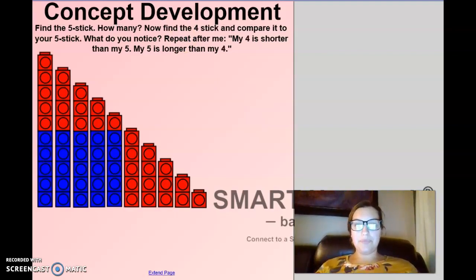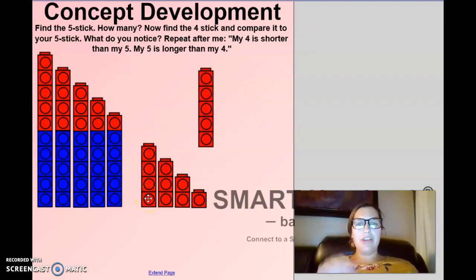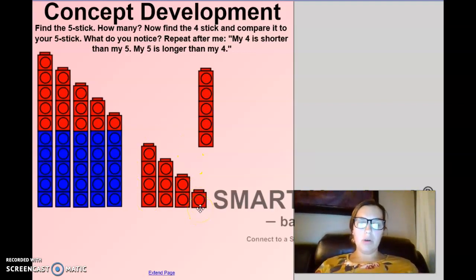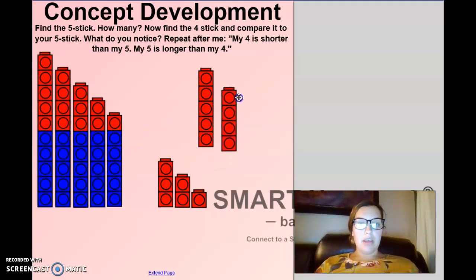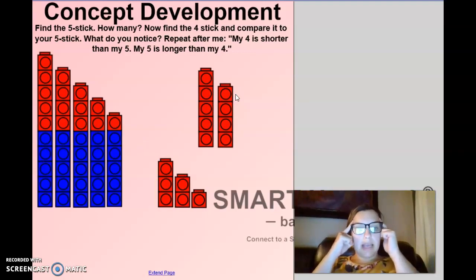What's an easy way we can do this? Are we going to start at this end? No, we know two is a smaller number. So we can start right here. We have one and then if we go over here, we have one, two. I'm going to put these next to each other. What do you notice?